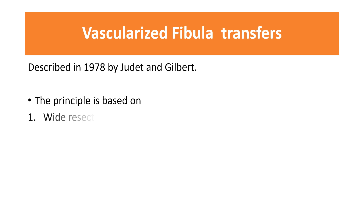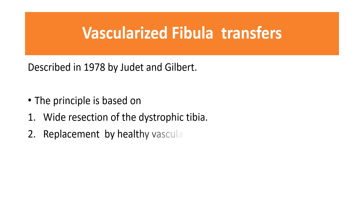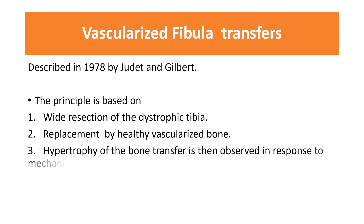The other surgical option is vascularized fibular transfer, first described in 1978 by Judet and Gilbert. The principle is based on wide dissection of the dystrophic tibia — removing the fibrous hamartoma — and replacement by a healthy vascularized bone transfer of the fibula. Hypertrophic bone formation is then observed in response to mechanical stimulation.